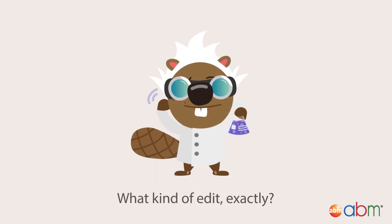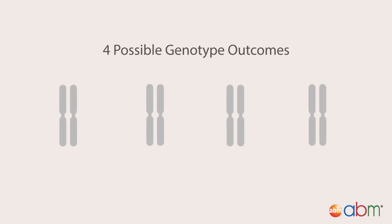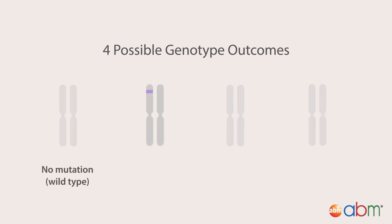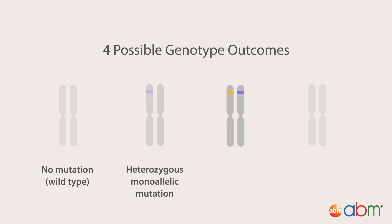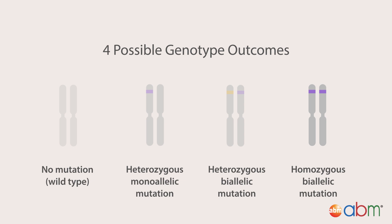But what kinds of edits exactly? When using CRISPR to genetically edit your cells, there are four possible genotype outcomes. 1. No editing occurs — this would be a wild-type clone. 2. A single editing event occurs only to one allele of the gene — this is called a heterozygous monoallelic clone. 3. Two different editing events occur to each allele, otherwise known as a heterozygous biallelic clone. 4. The same mutation occurs to both alleles — this results in a homozygous biallelic clone.